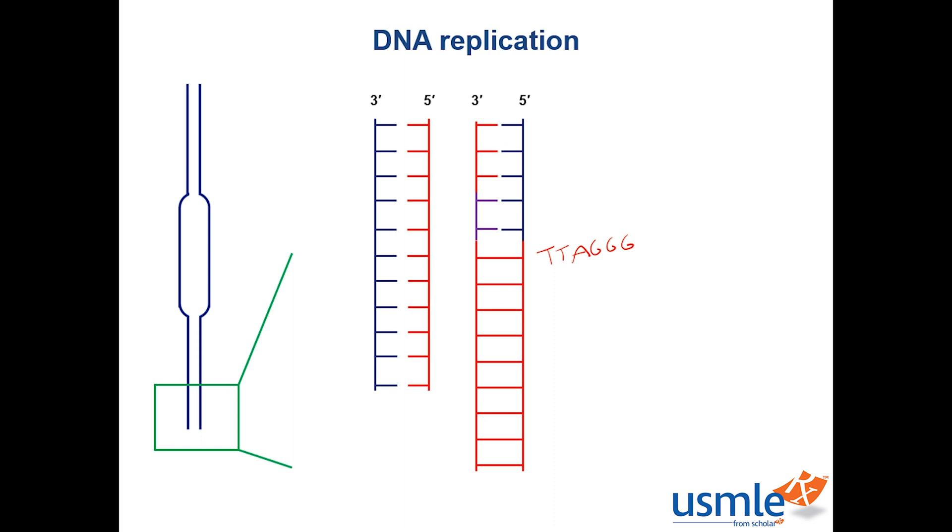In adults, telomerase is only expressed in cells that need to divide a lot, such as stem cells and other cells in the immune system. Although mutations that cause telomerases to be expressed in other cells are one of the things that are necessary for a neoplastic transformation, since without telomerase, even cancer cells will lose the ability to divide after a while.